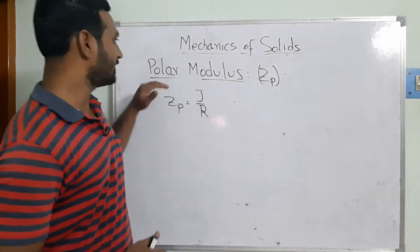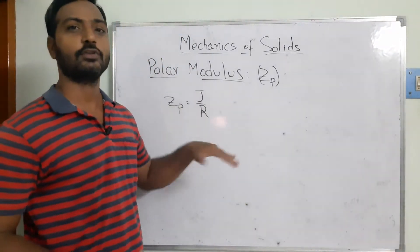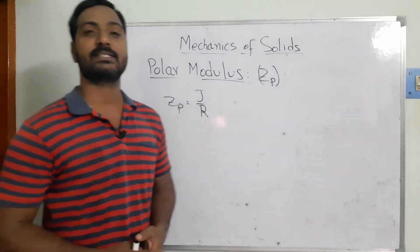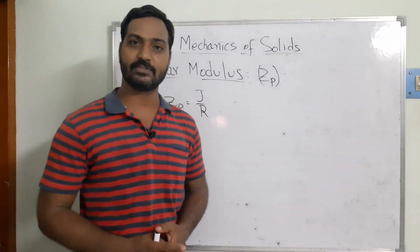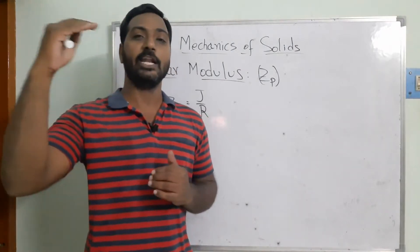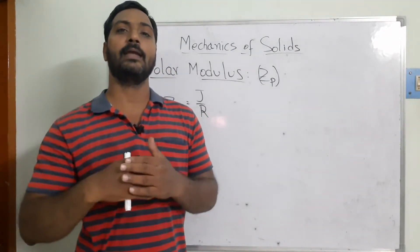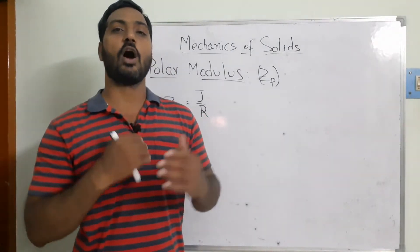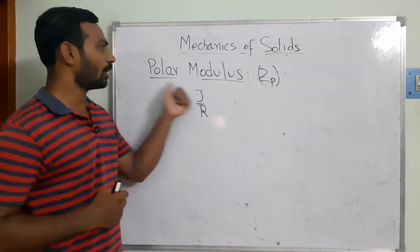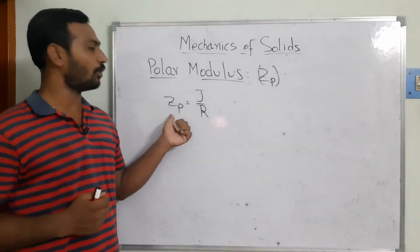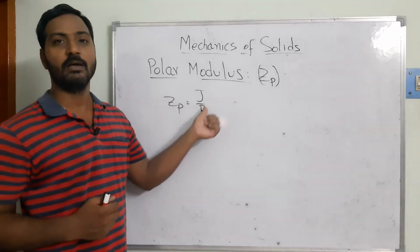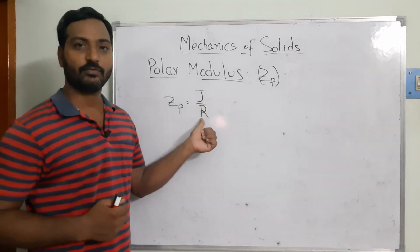Now we are trying to find what is the polar modulus. This is similar to the beam, where we have the section modulus — that is the moment of inertia divided by the distance to the outermost layer. Similarly, the polar modulus is equal to the polar moment of inertia divided by the radius of the shaft.